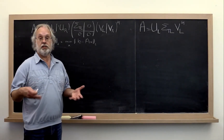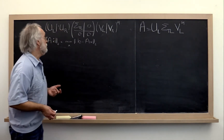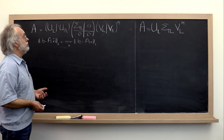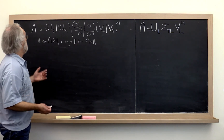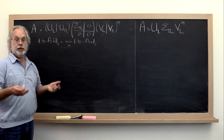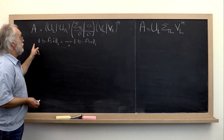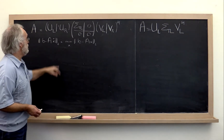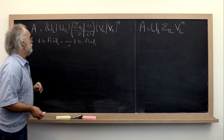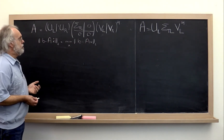Now that we've looked at the simpler problem where A has linearly independent columns, let's try to tackle the general problem — the case where A doesn't necessarily have linearly independent columns. Here's the linear least squares problem, and this time squaring both sides doesn't really help as much.